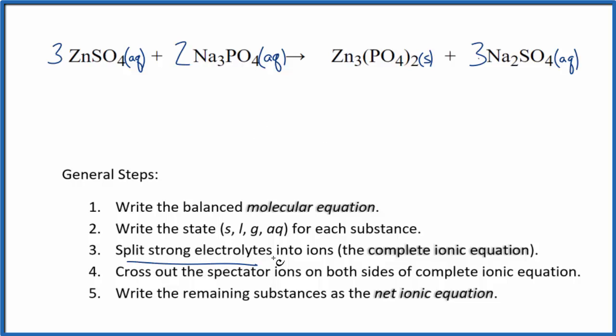Now we're going to split the electrolytes, the strong electrolytes, into their ions for the complete ionic equation. So zinc, that's always going to be 2 plus, and the entire sulfate ion, 2 minus. Good one to remember. Three of these zinc ions, and we have three sulfates. That SO4, 2 minus.